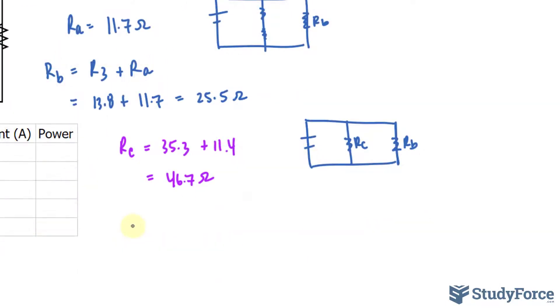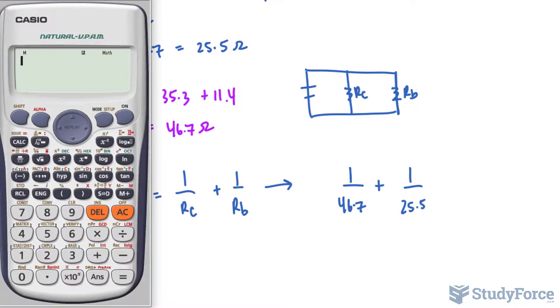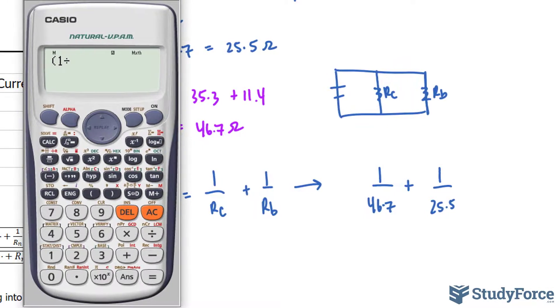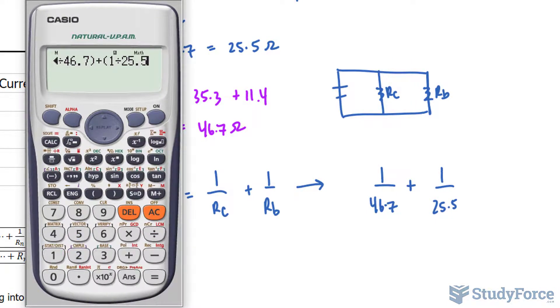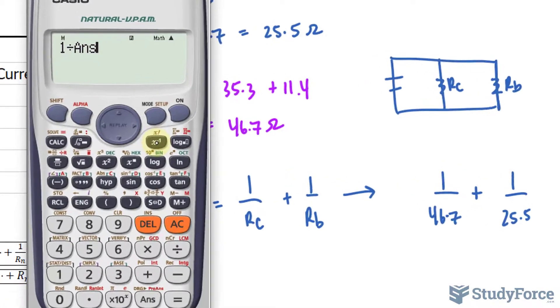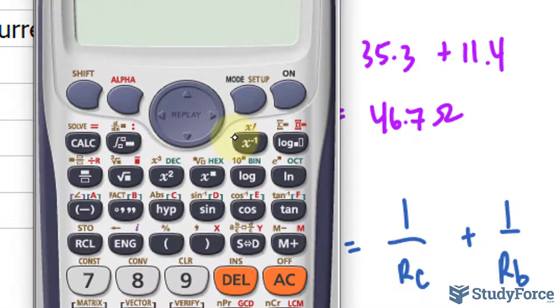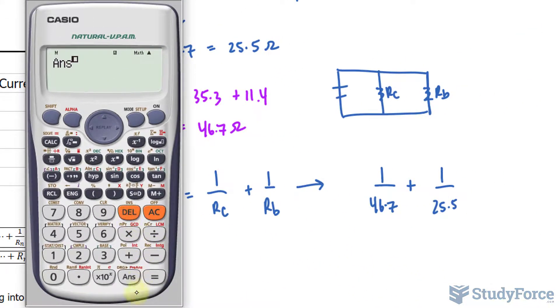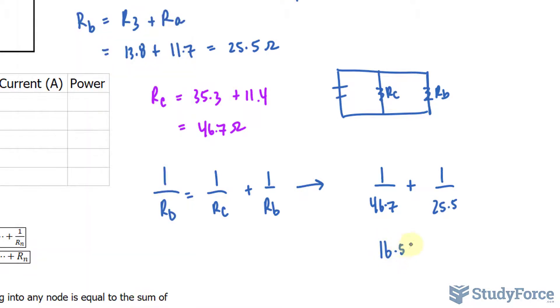So one last transformation, they're in parallel, so I'll write down 1 over R sub D equals 1 over R sub C plus 1 over R sub B. Let's plug in the values. 1 over 46.7 plus 1 over 25.5. So when we sum these up, don't forget to reciprocate it by writing 1 over its answer. So 1 over 46.7 plus 1 over 25.5. Then we're going to take its value, and we'll say 1 divided by answer. So we're reciprocating it technically. There's actually a button on your calculator that can do it for you, and it's right here in case you want to do that, instead of saying 1 divided by what you found. The answer was 16.5 ohms.